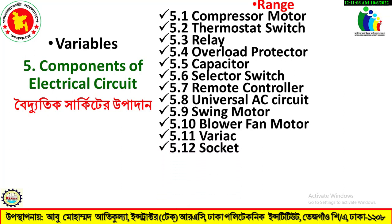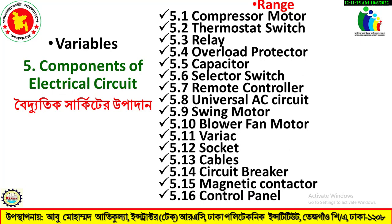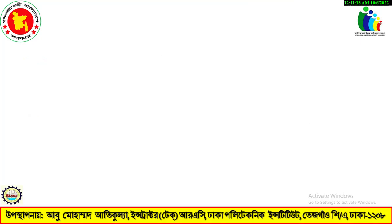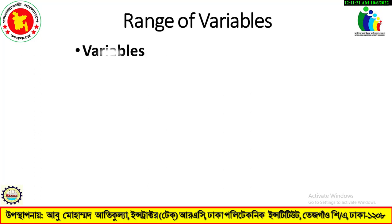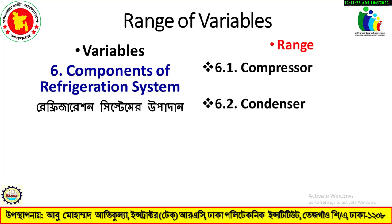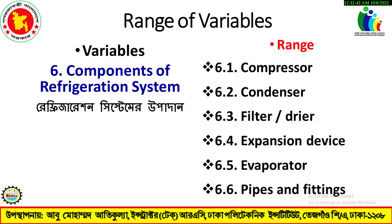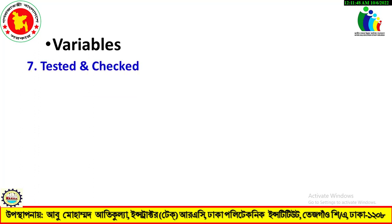Number five, Components of Electrical Circuit: bus socket, cables, circuit breaker, magnetic contactor, control panel. Number six, Components of Refrigeration System: compressor, condenser, filter or dryer, expansion device, evaporator, pipes and fittings.